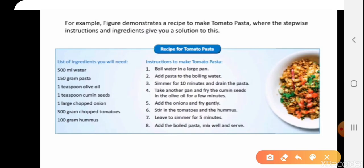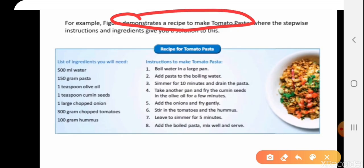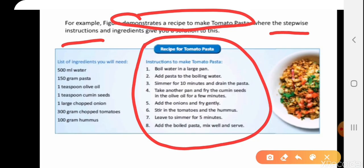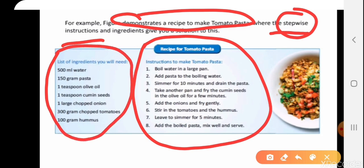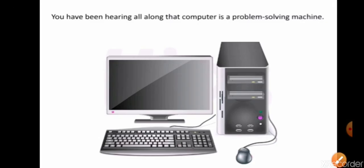Look at this example of a dish. This figure demonstrates the recipe to make a tomato pasta. There are stepwise instructions — these instructions are stepwise. Then you have a list of ingredients required to create the tomato pasta. So two important things are required: step-by-step instructions and a list of ingredients to create any dish.